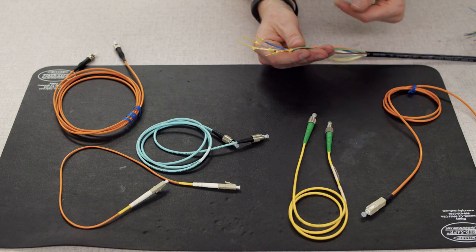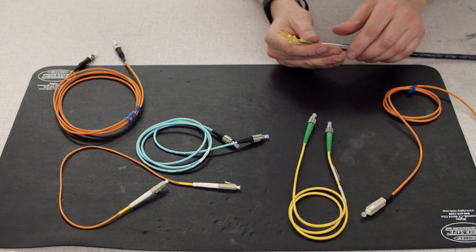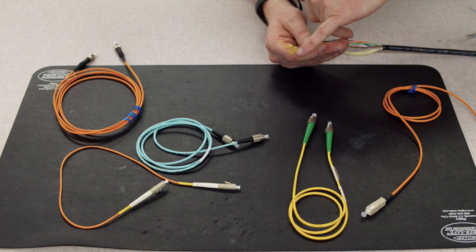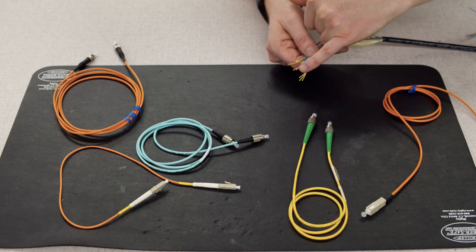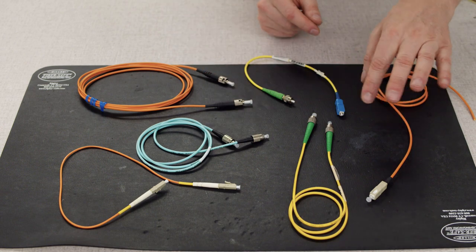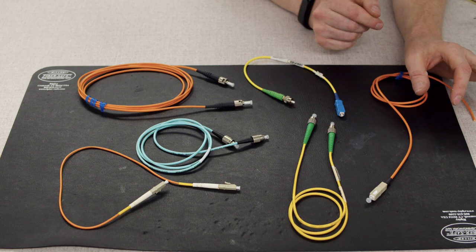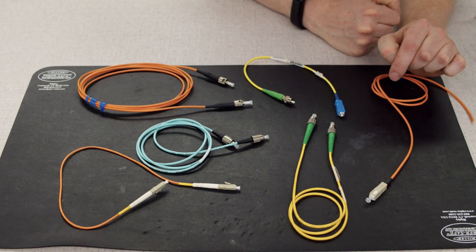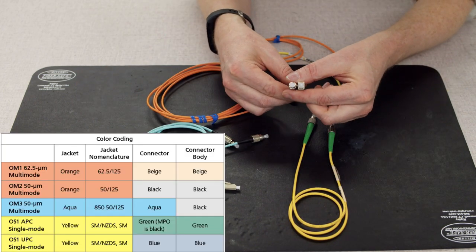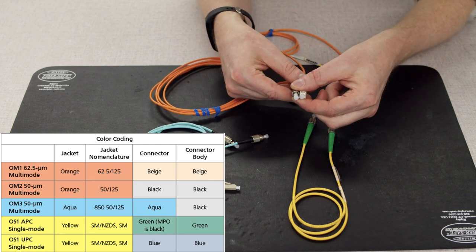So you see 50/125 so it tells you it's a 50 micron core 125 cladding. So with that said you're probably wondering like what are all these different colors then, you've got six different colors going on, what's that about. So the fact is even though this one's orange it doesn't mean that it's multi-mode because in breakout cables and distribution cables like this one the colors refer to what you would call a channel number or a fiber number.